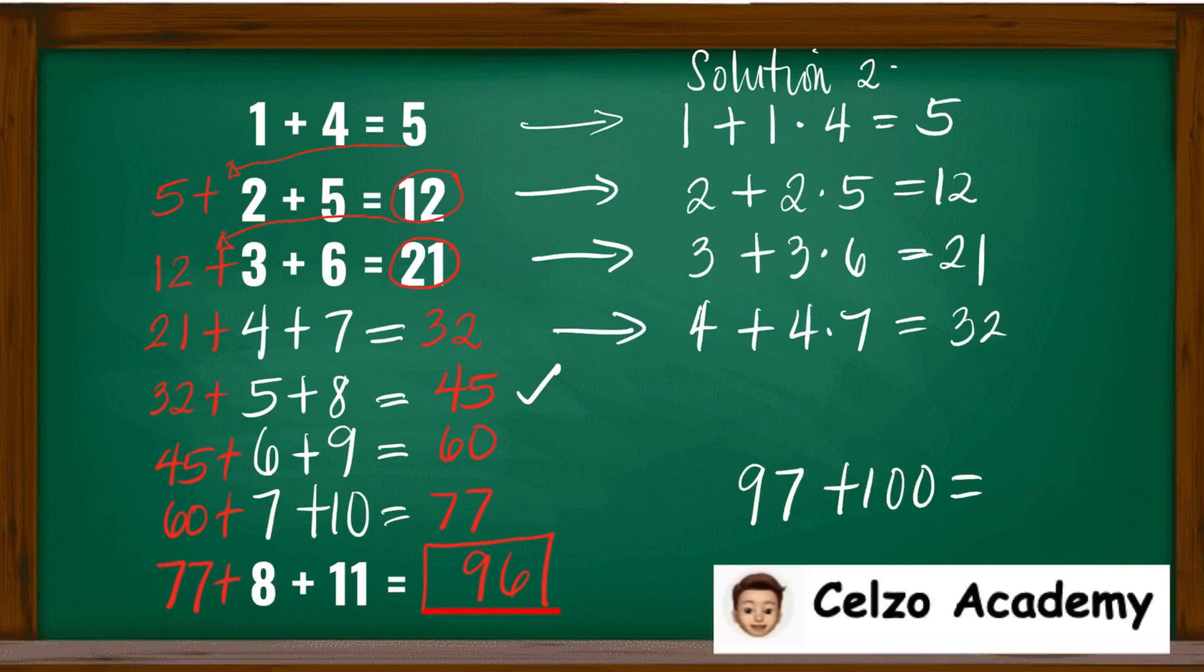6 plus 6 times 9 is 60. 7 plus 7 times 10 is 77.